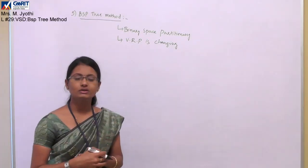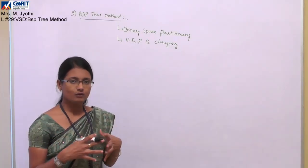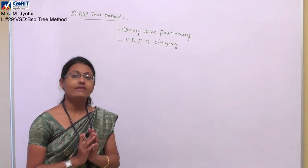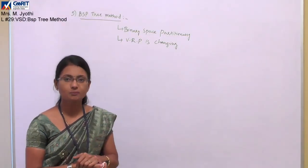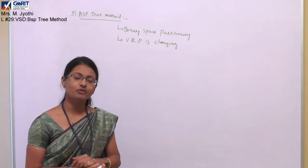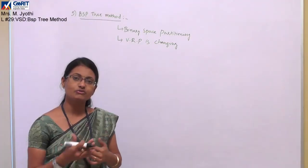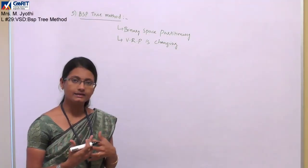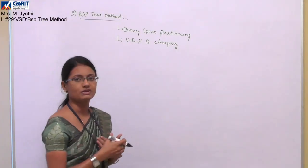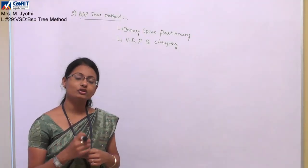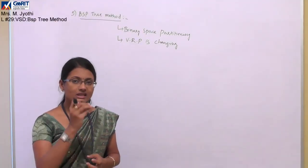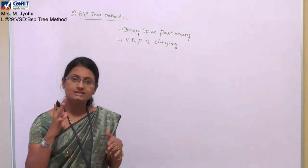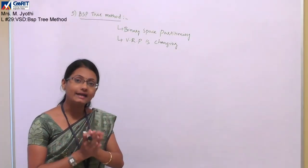In this method, all the surfaces we have are considered as one space, and that space is partitioned using partitioning planes. After partitioning, we find which objects are in front of the partitioning plane and which are behind it. Using that data, we draw a tree called the binary space partitioning tree. In a binary tree, each node has two branches only — left and right.